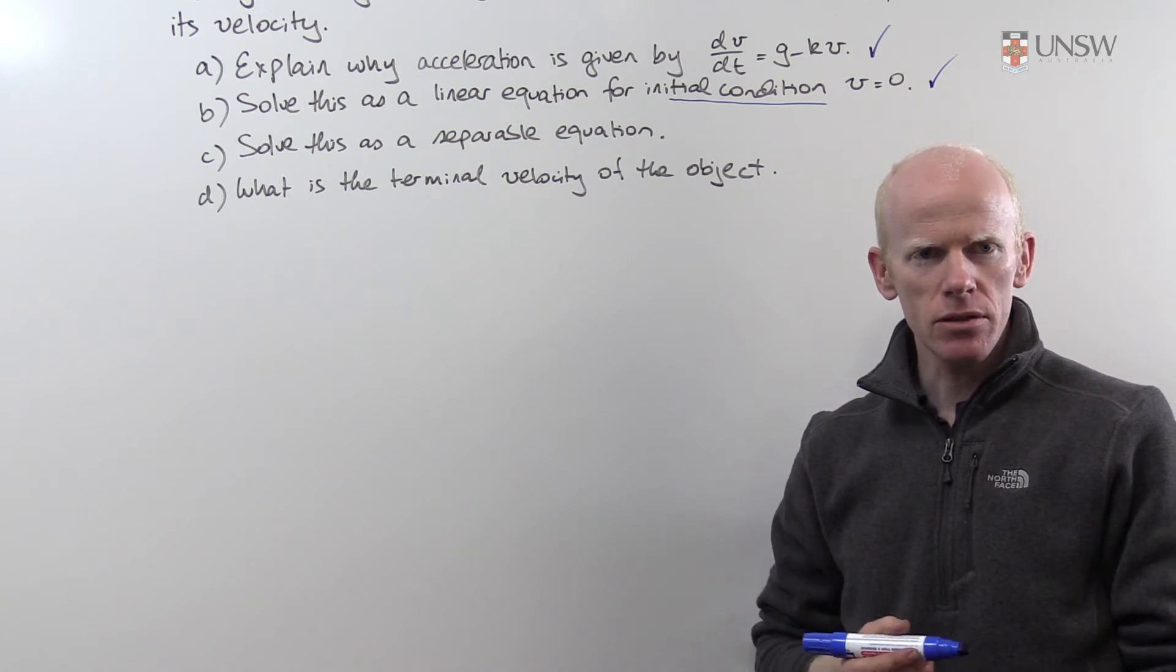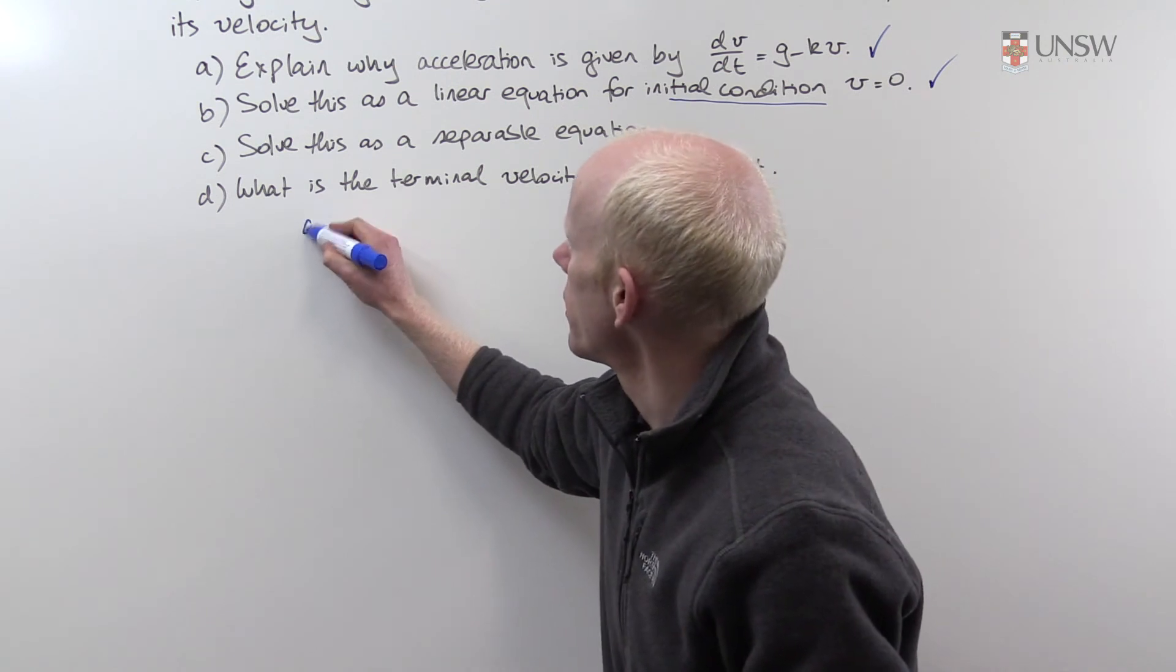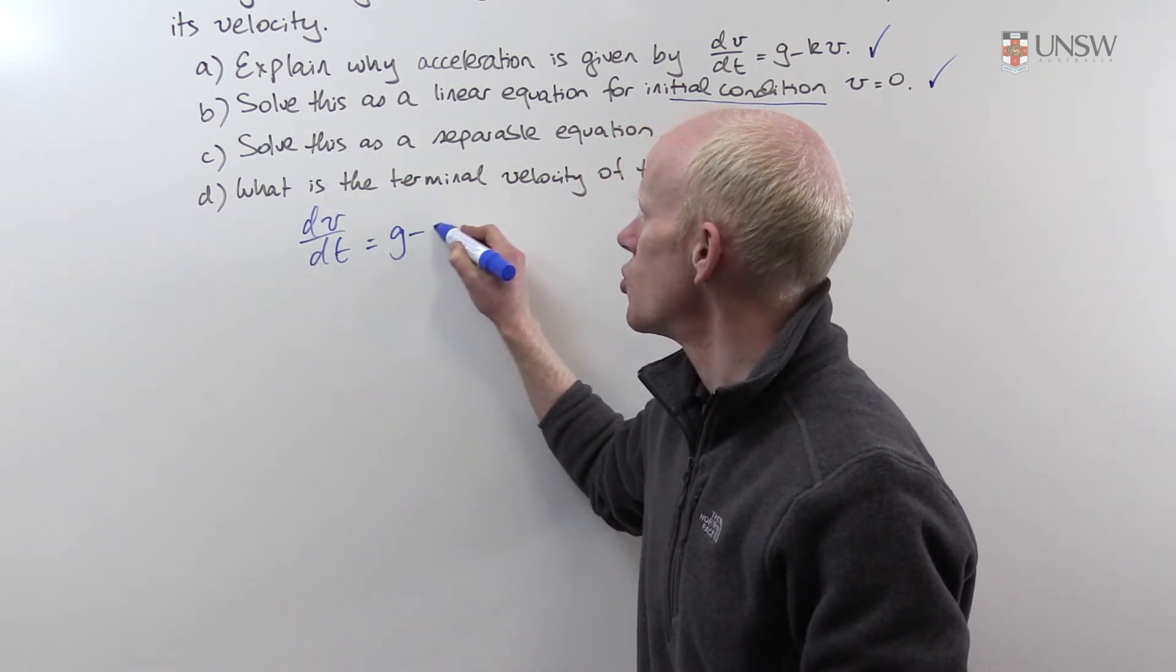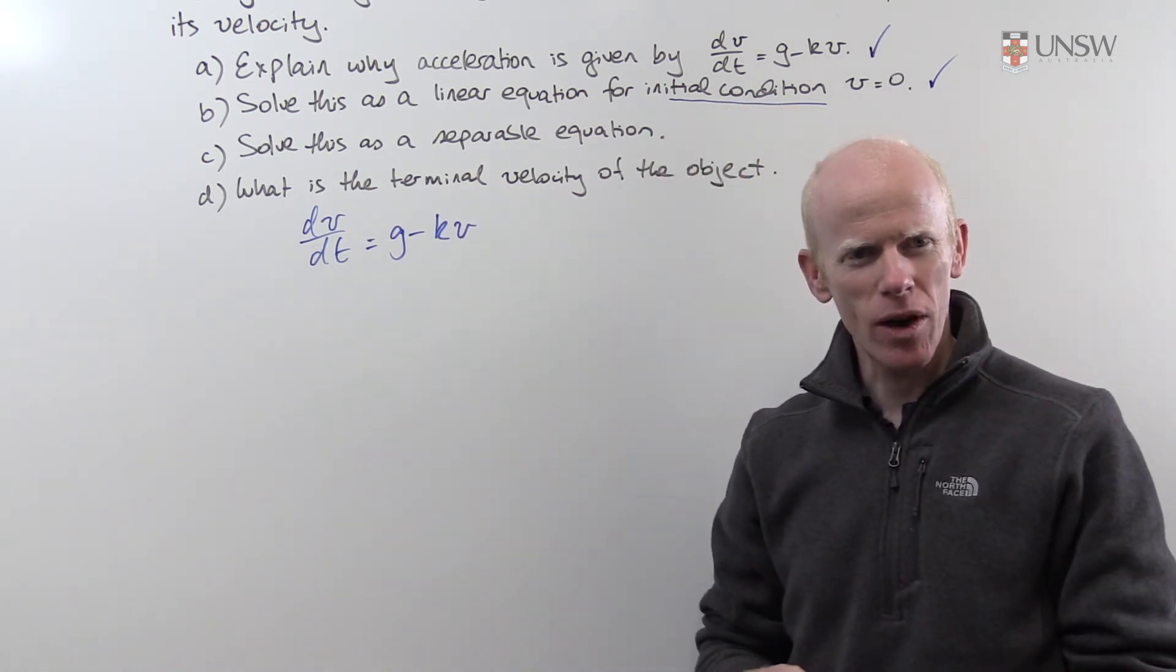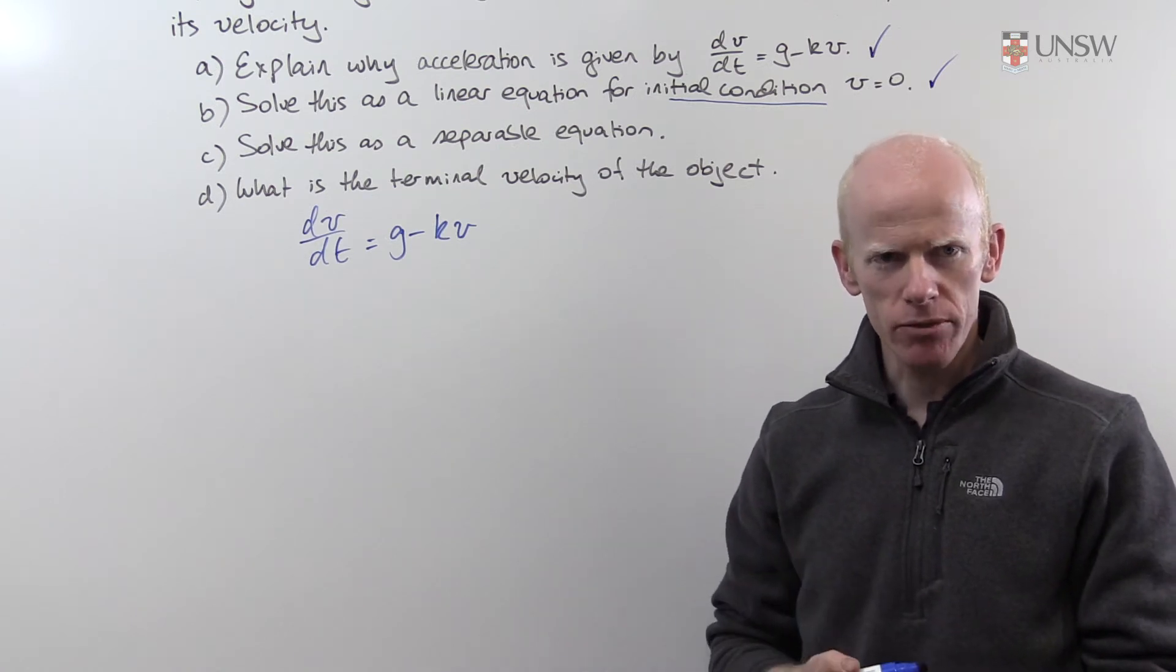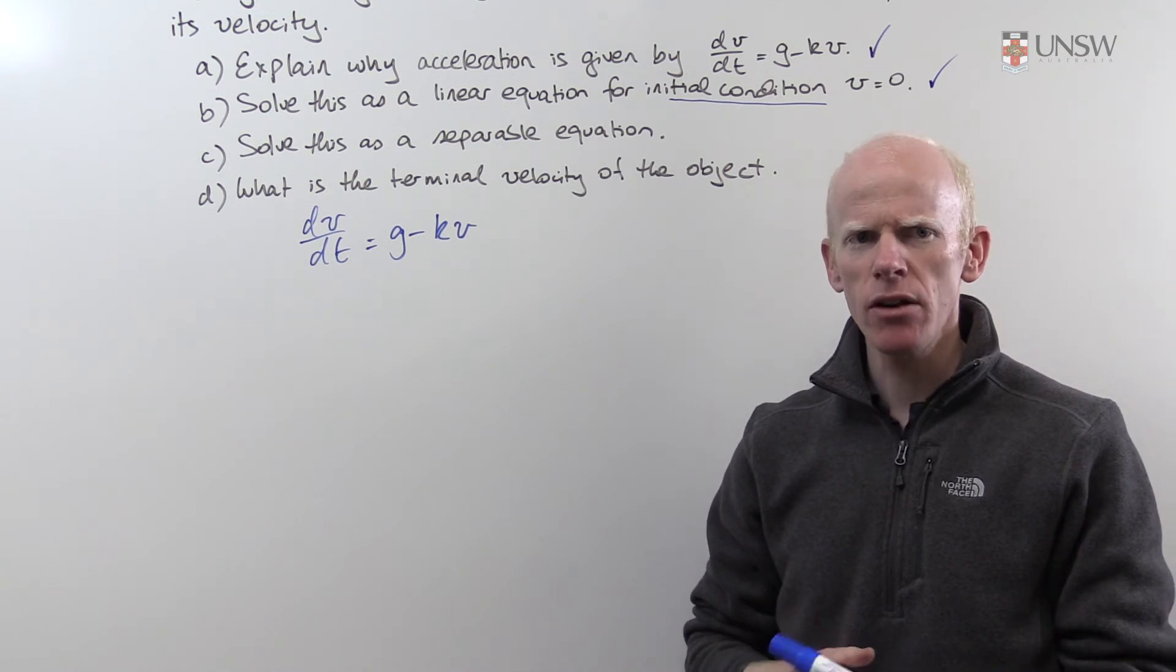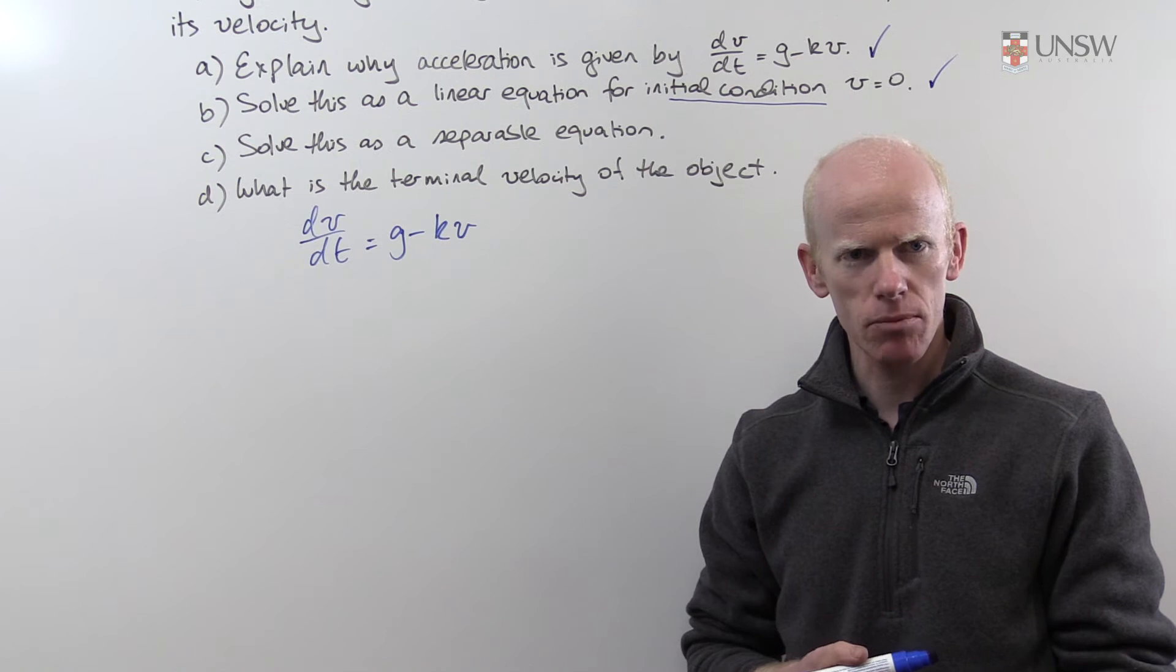In this part of the question, we are solving this same differential equation, dv/dt equals g minus kv, not as a linear differential equation as we did in part b, but as a separable differential equation. Can you separate the variables? I encourage you to pause the video right now and rewrite this equation in its separable form.